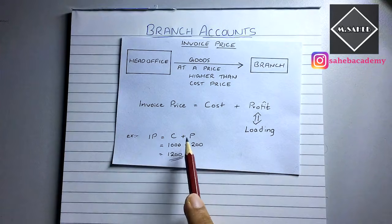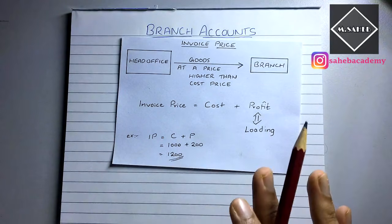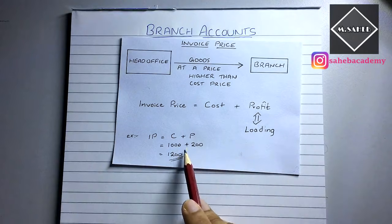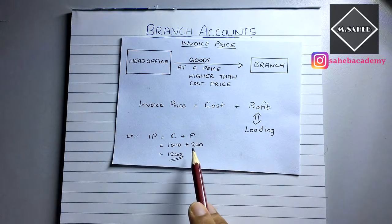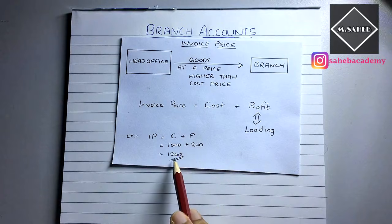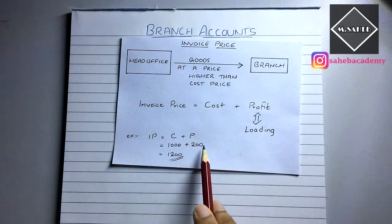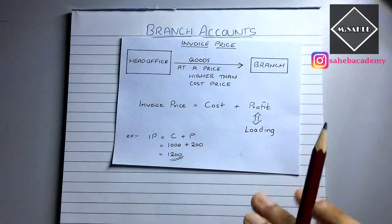Invoice price equals cost plus profit. For example, a company incurred a cost of ₹1,000 to produce a product. It sends that good to its branch not at cost but at invoice price by adding a margin of profit — 20% of ₹1,000 is ₹200. So ₹1,000 plus ₹200 gives an invoice price of ₹1,200. Here ₹1,000 is cost, ₹200 is loading, and the loading percentage is 20%.